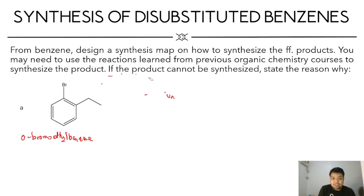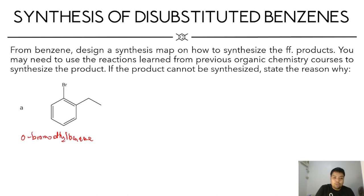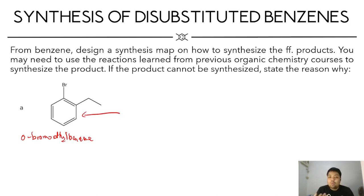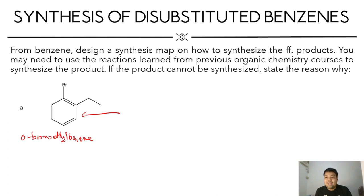In order to synthesize this, the most convenient approach in this case is the retrosynthetic approach. When we say a retrosynthetic approach, we work our synthesis map backwards — from the final product, we draw what's the immediate step that will lead you to this final product. Then we repeat that on the subsequent reactant until we arrive at our starting material. In this case, for ortho-bromo-ethyl-benzene, there are two possible pathways.